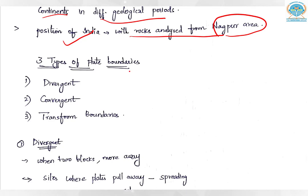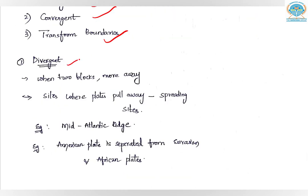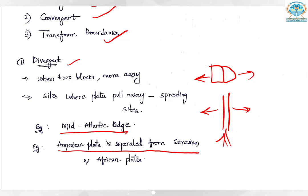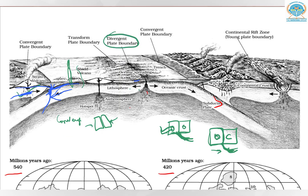There are three types of plate boundaries: divergent, convergent, and transform. At a divergent boundary, two plates pull away from each other, forming a fault. The best example is the Mid-Atlantic Ridge, which is responsible for seafloor spreading. The American plate is separated from the Eurasian and African plates by this divergent boundary. As the landmasses move apart, a gap forms and a fault runs all along the way.